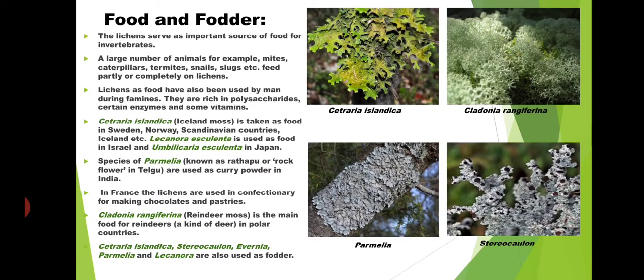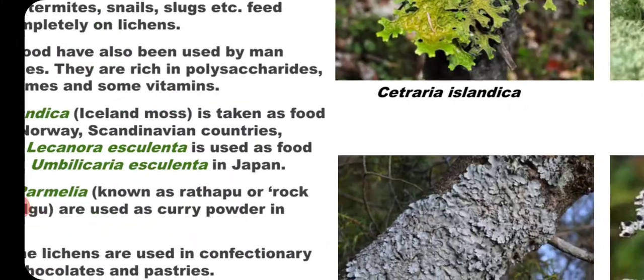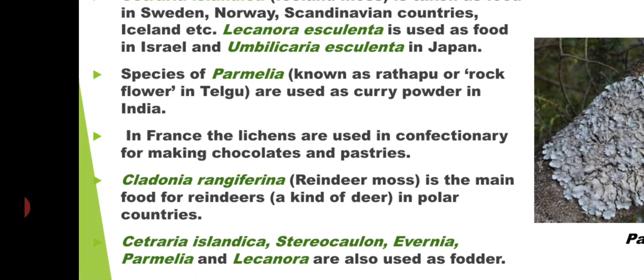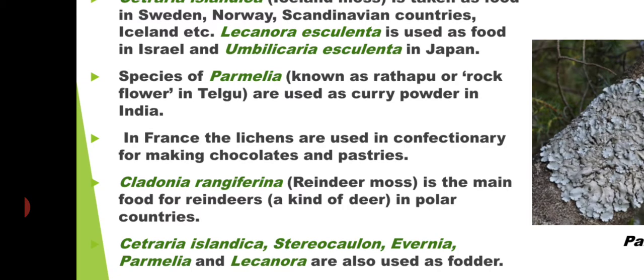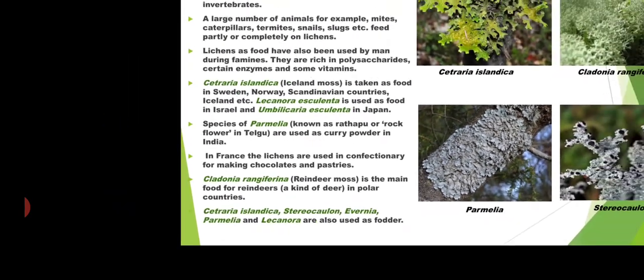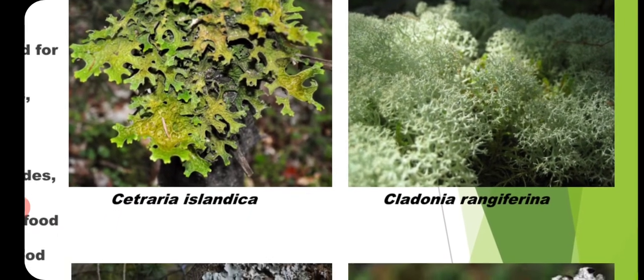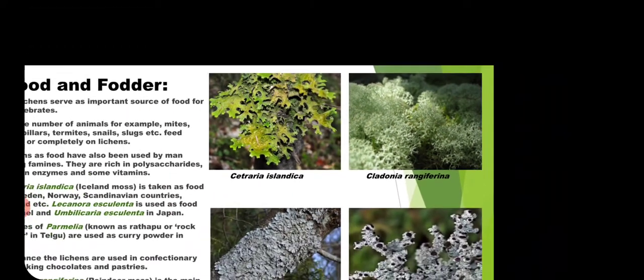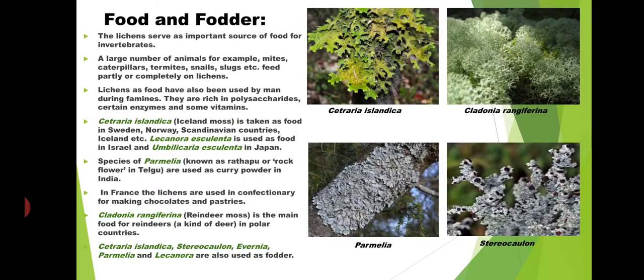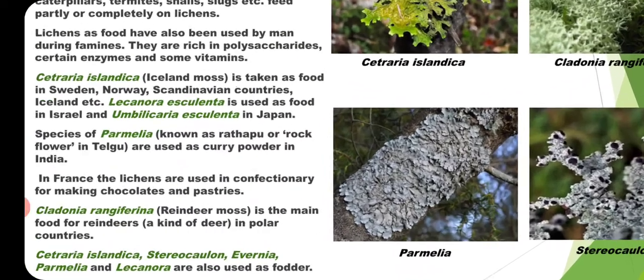In France, lichens are used in confectionery for making chocolate and pastries. Cladonia rangiferina, known as reindeer moss, is actually a lichen and serves as fodder for reindeer. In deep forests we can see heavy masses of this Cladonia species. Other species such as Cetraria icelandica, Sticta, and Parmelia are also used as fodder.